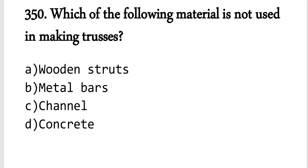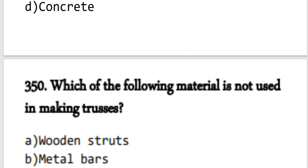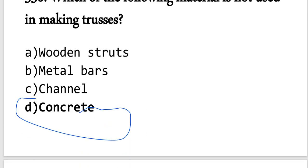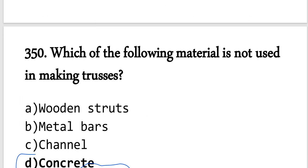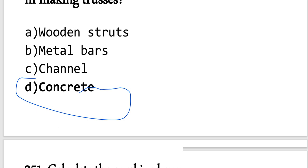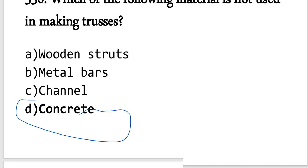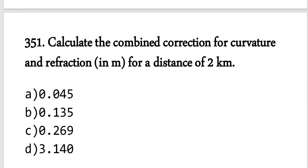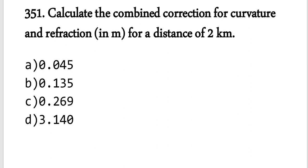Question number 350: Which of the following materials is not used for making trash racks? The answer is concrete — concrete is not used for trash racks. That covers 25 questions in this session. In the next part we will go to question number 351. Thank you for watching.